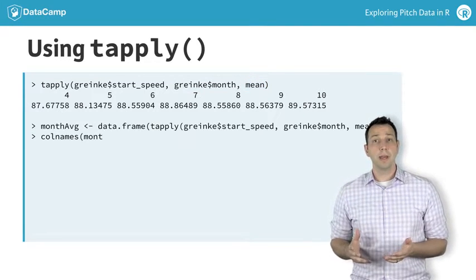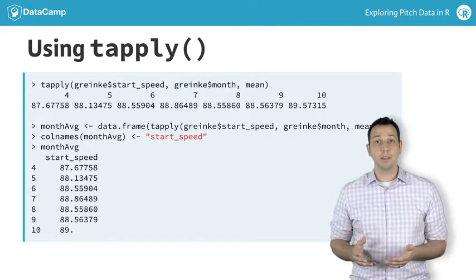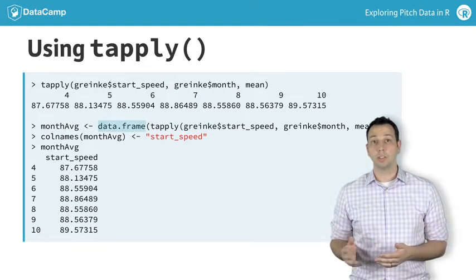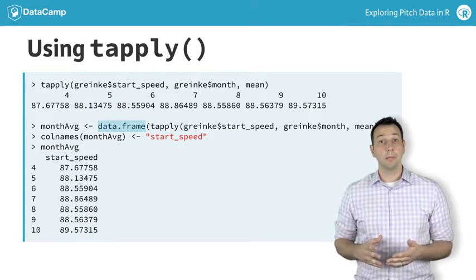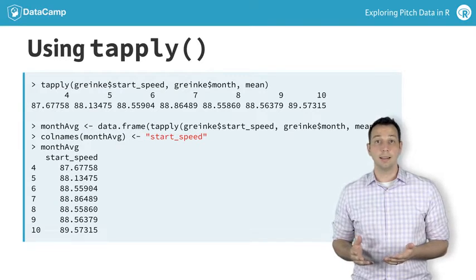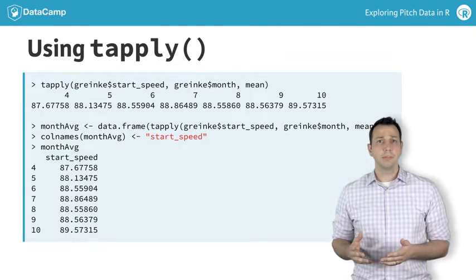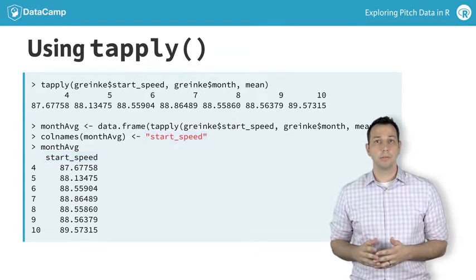You can format the tapply output as a data frame by wrapping it within the data frame function. This allows you to name the new summary vectors as variables just like in any data set, which can simplify later code and allow you to treat your data just like you would any other data frame.